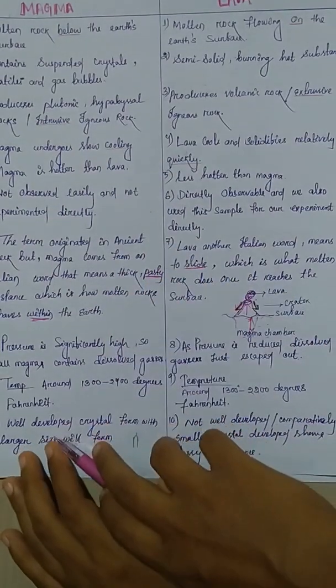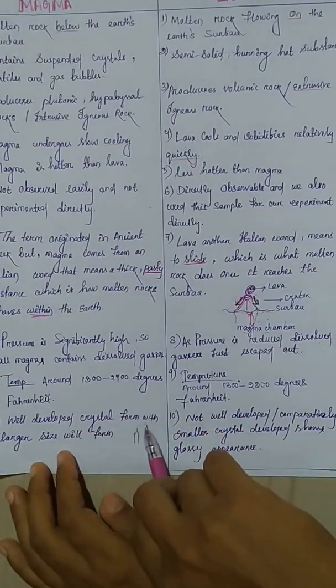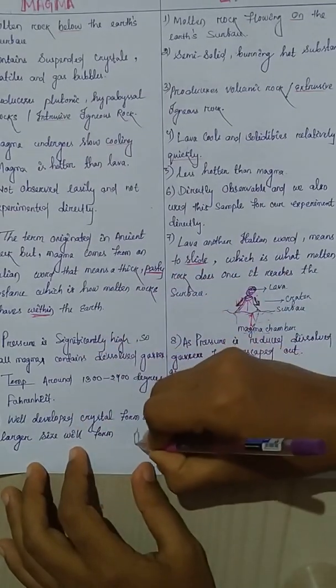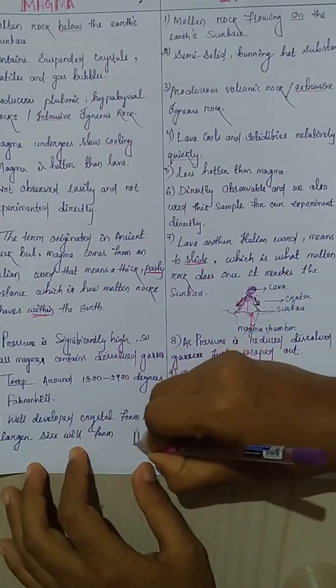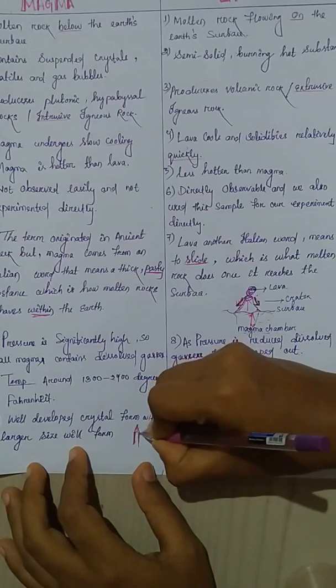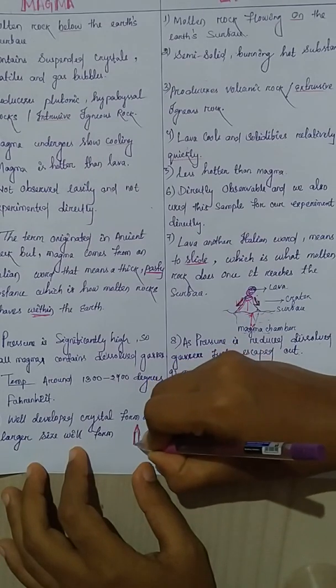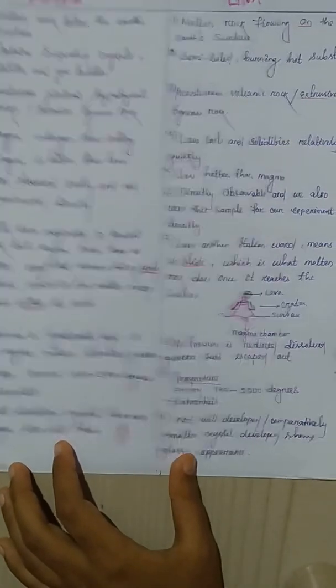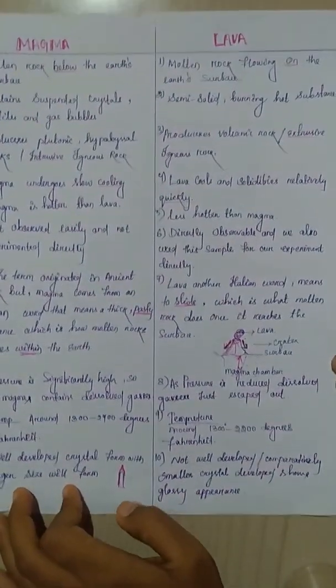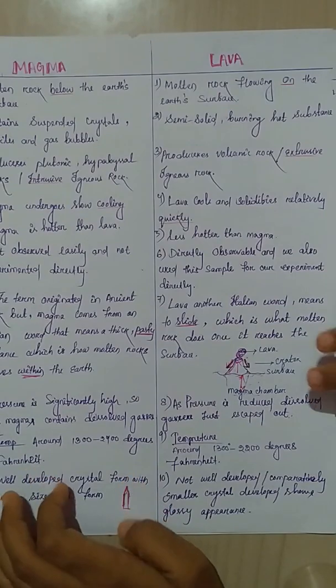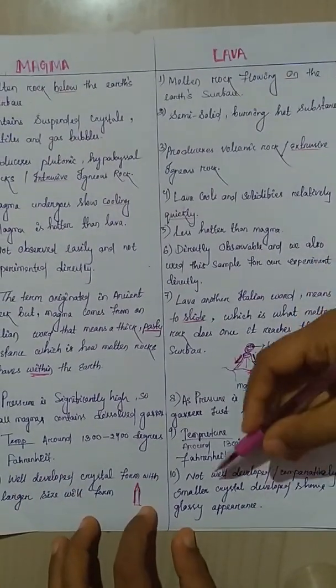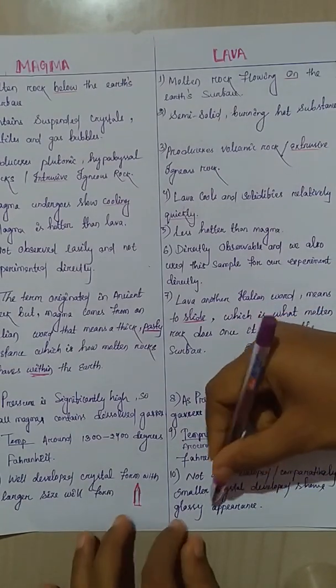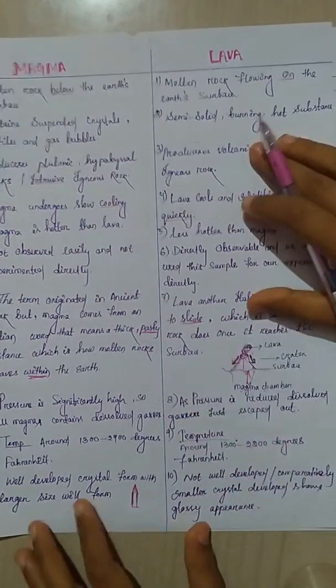In case of magma, well-developed crystal forms with large size, its size is large and its sides are well developed. But in case of lava, we are getting glassy appearance, not well developed, comparatively smaller crystals developed, which shows glassy appearance.